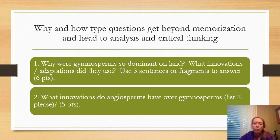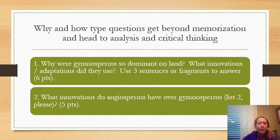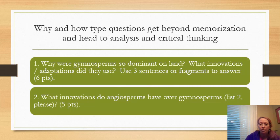Use three fragments or sentences, and it's worth six points — that tells them how many points and how big the question is. A follow-up question to that is: 'What innovations did angiosperms have over gymnosperms?' It's a shorter question worth five points, and it might just be bullet points — super short, just making a list about angiosperms.